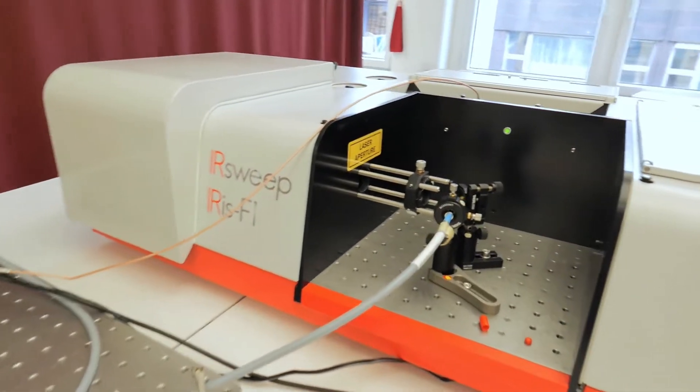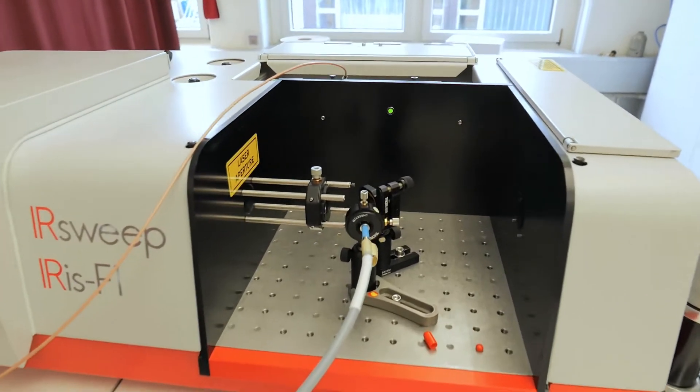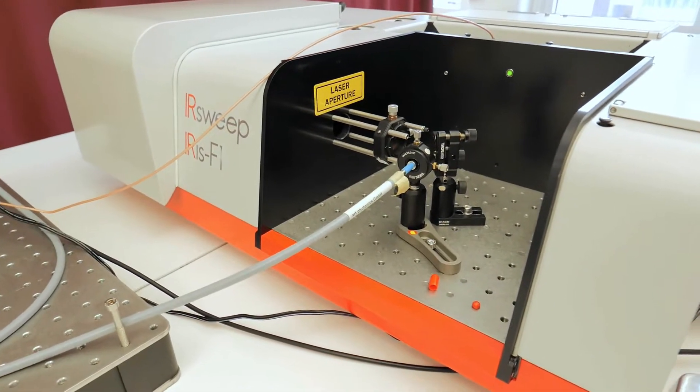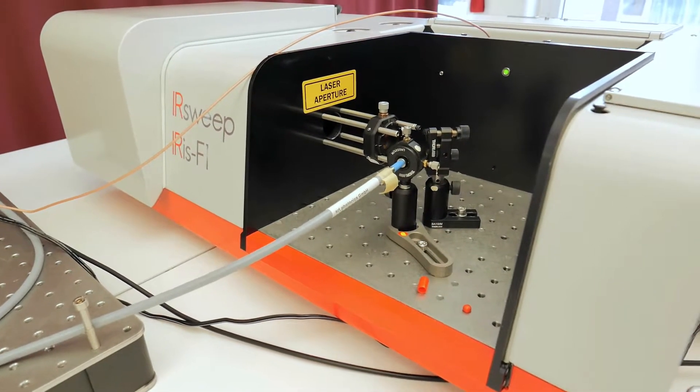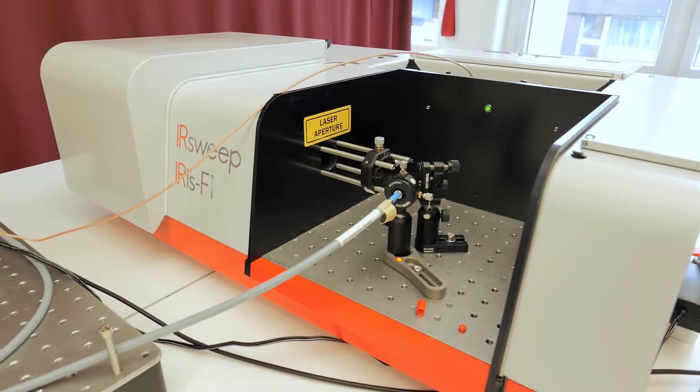You can see we have here our Iris F1 mid-infrared spectrometer and it's coupled with a rather long fiber from Art Photonics in Germany. This is a mid-infrared fiber and it's currently one of its kind.